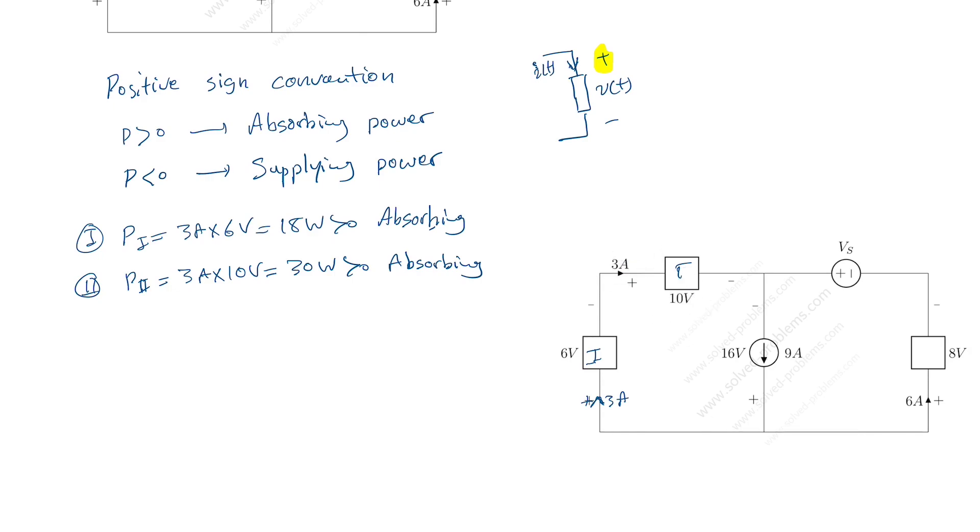For element three, element three is this current source. So for this one, what do we have? So here current is nine amp. But is it entering from the positive reference? We see that no, it's actually exiting from positive reference. So this is like nine amp. What to do here? Here we have negative sign convention. So here you need a negative sign in your multiplication, but the way that you can see this, you can say that here this nine amp that I have, I can define another current in the other direction and say that it is minus nine.